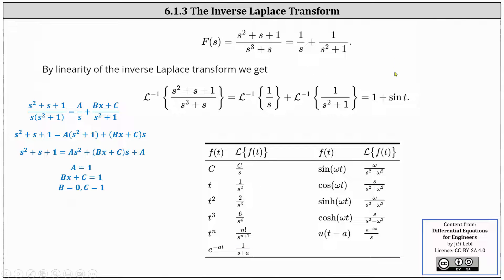For the next step, shown here in blue on the left, we multiply both sides of the equation by the LCD, which results in s² + s + 1 equals A·(s² + 1) plus (Bs + C)·s. Equating coefficients: because s² must equal A·s², we know A = 1. We can also confirm this from the constant term. Then Bs + C must equal the coefficient of s, which is one, indicating B = 0 and C = 1. So the partial fraction decomposition is 1/s + 1/(s² + 1).